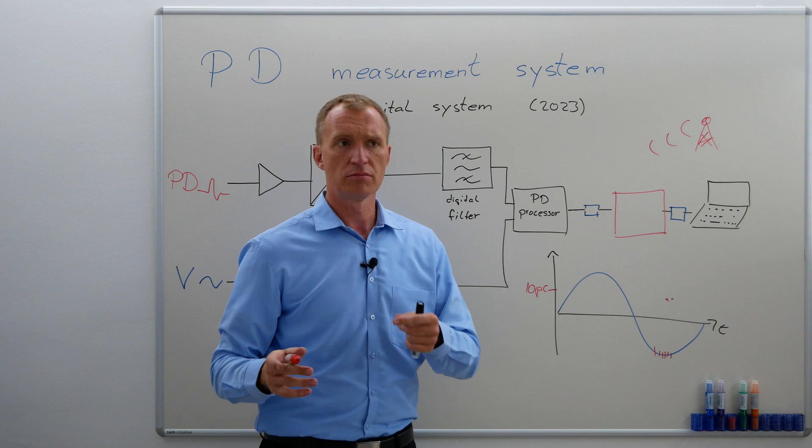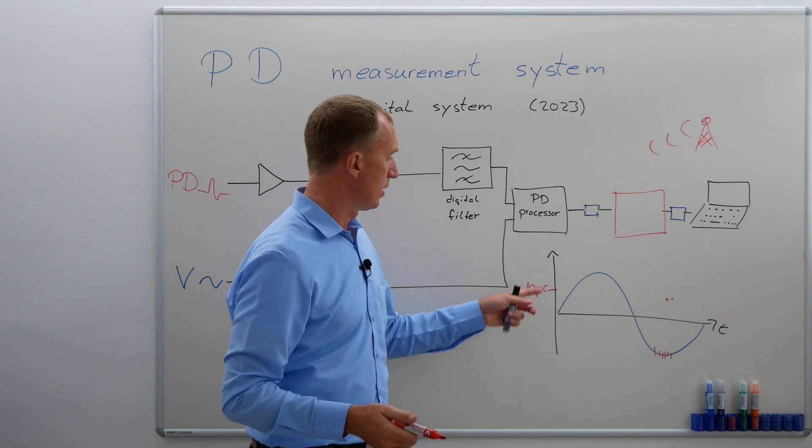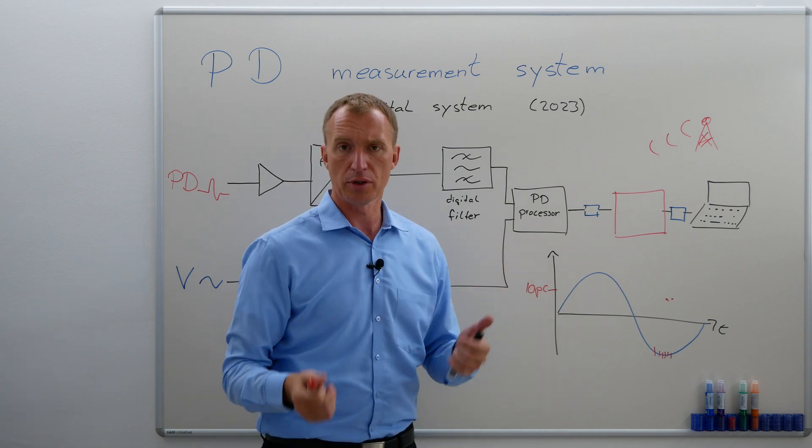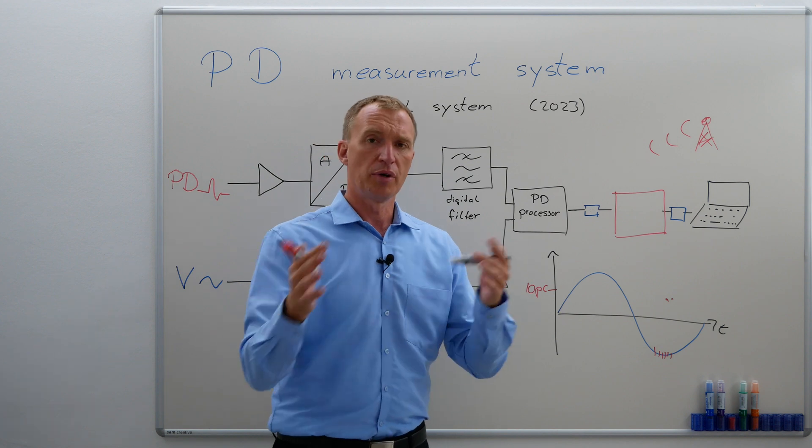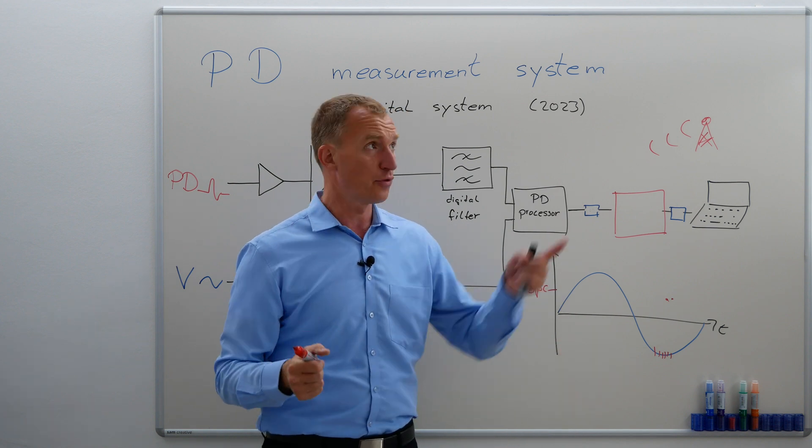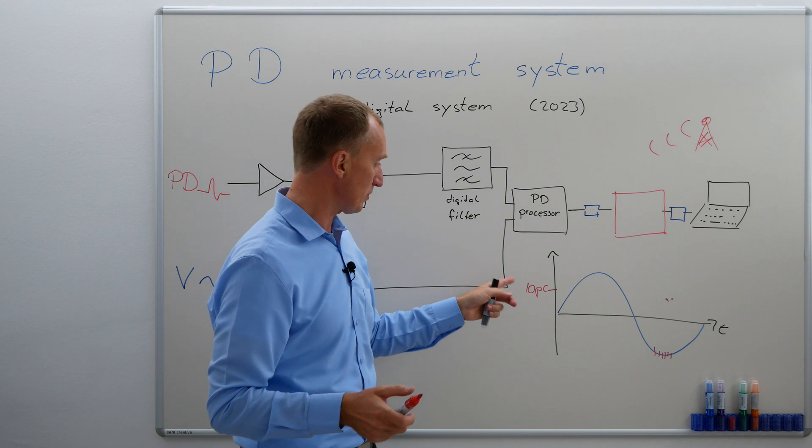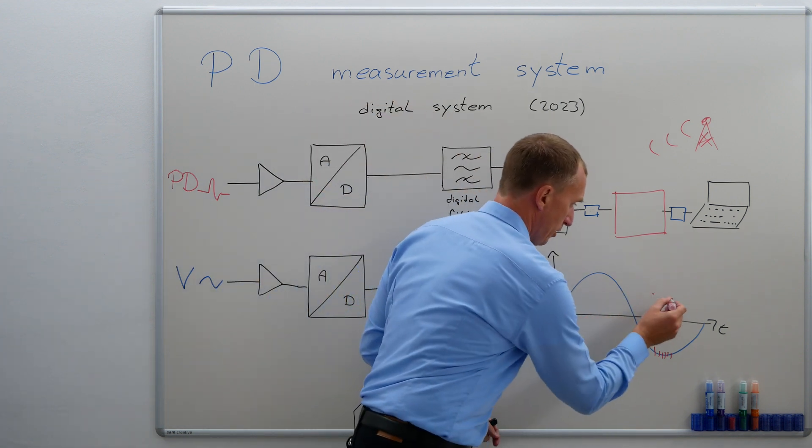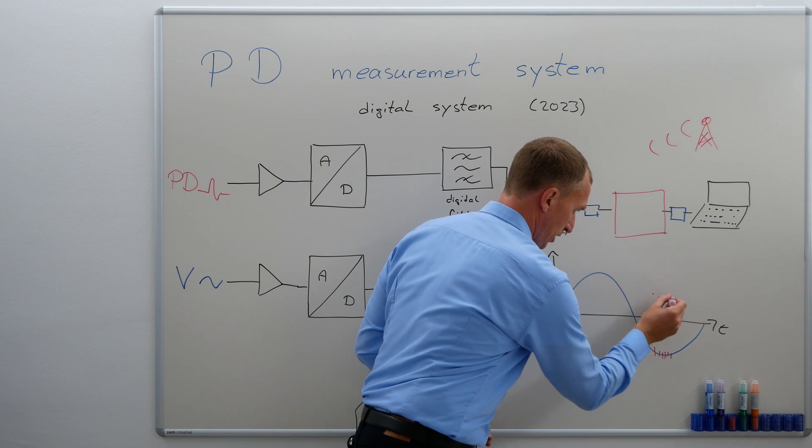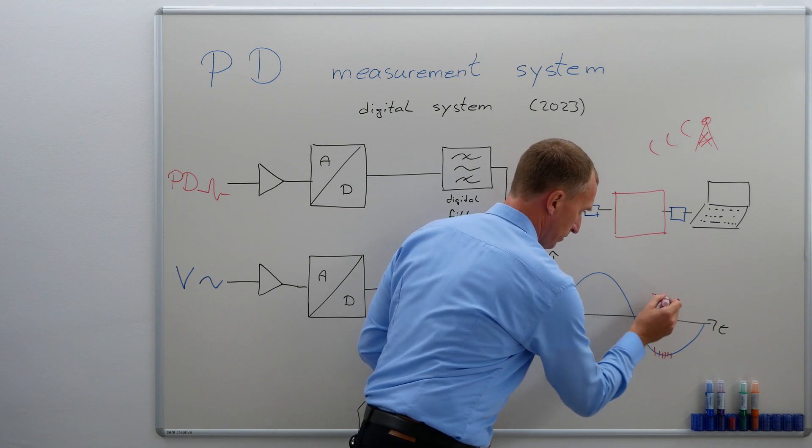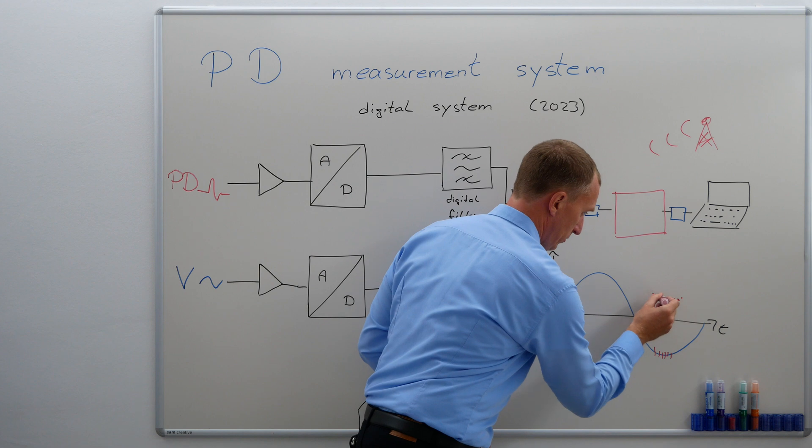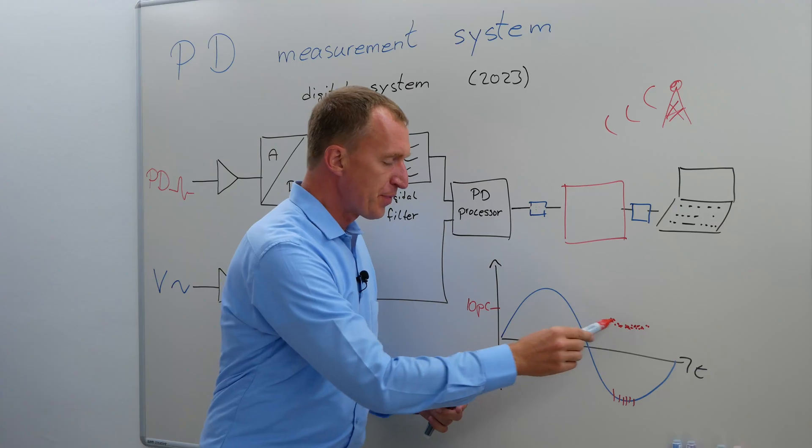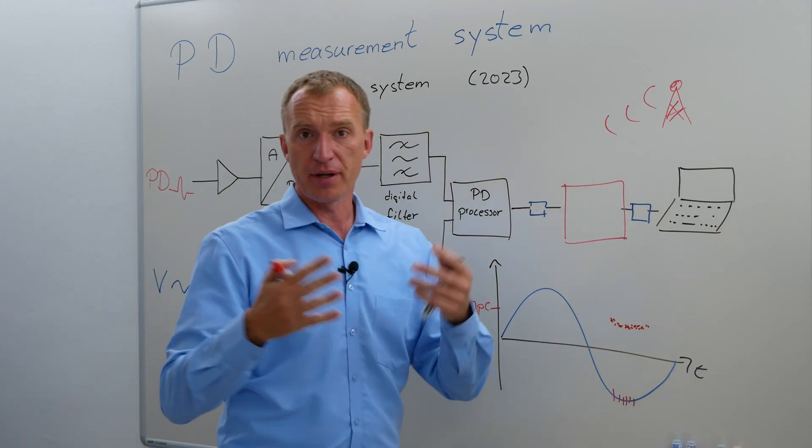And depending on your preference, or depending on the system, this can usually be displayed in logarithmic view or linear view, but we don't want to get in there right now. There's a video for that. You can find it here. So, let's say I have another partial discharge coming, and another one, and another one, and another one, and I'm ending up with some kind of a pattern.